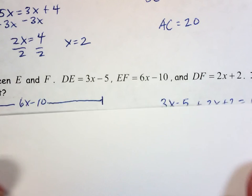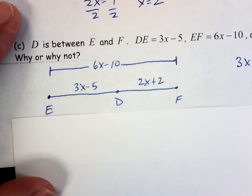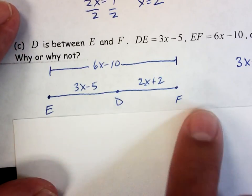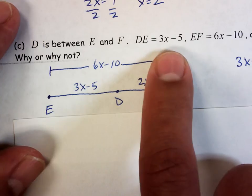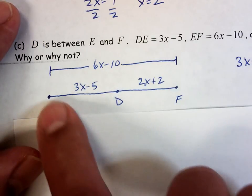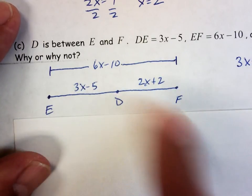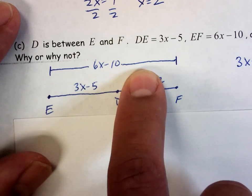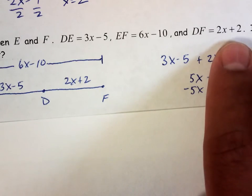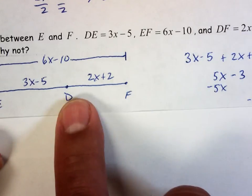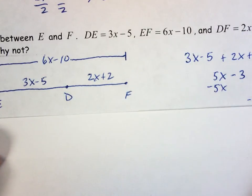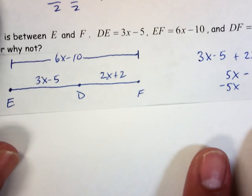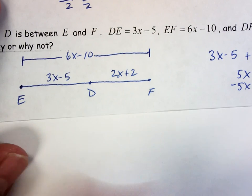Last one. D is between E and F. So again, I drew my picture. There's D and it is between E and F. DE is equal to 3x - 5. DE equals 3x - 5. EF, all the way across, is 6x - 10. And DF is equal to 2x + 2. DF equals 2x + 2. Then it says, is D the midpoint? And it says, why or why not? You must answer that in a sentence. Why or why not? Is D the midpoint? Yes or no. If it is, explain why. If it's not, explain why.